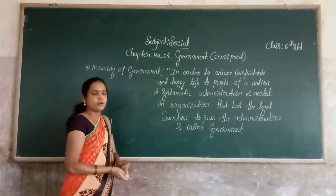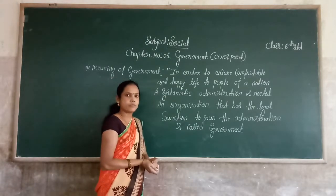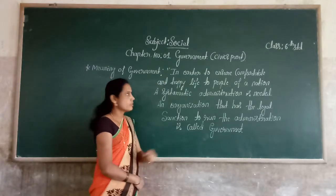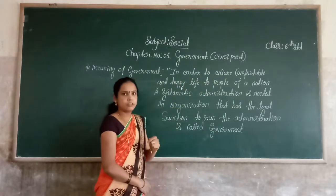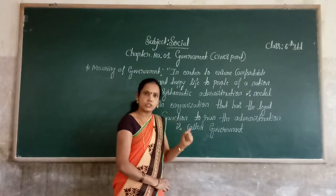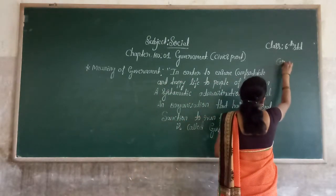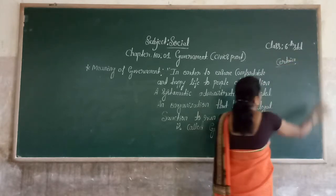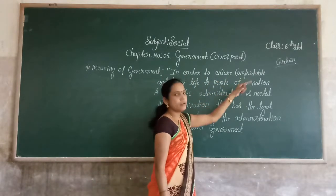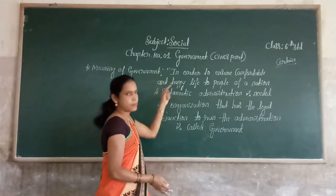Understand children? Meaning of government — first learning point in this lesson. What is the meaning of government? In order to ensure — ensure means make certain or make sure — comfortable and happy life to people of the nation.